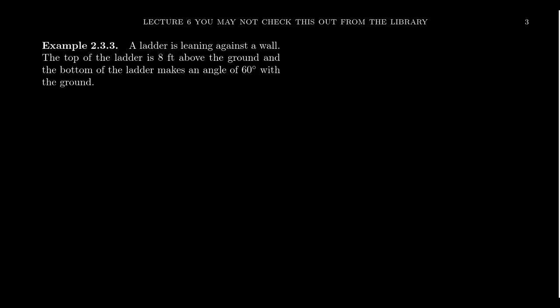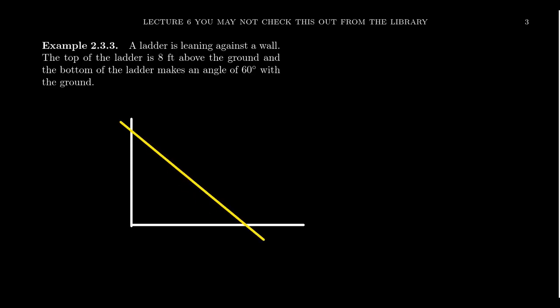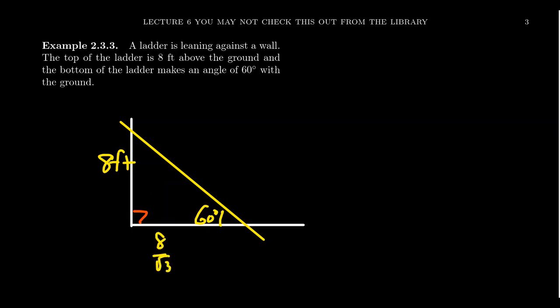As another example, consider a ladder leaning against a wall — a classic trigonometry problem. Assuming the wall is perpendicular to the ground, the ladder forms a right triangle. Suppose the top of the ladder is 8 feet above the ground and the angle the bottom of the ladder makes with the ground is 60 degrees. This makes a 30-60-90 triangle. Since 8 feet is opposite the 60-degree angle, we divide by the square root of 3 to get the short side: 8/√3 ≈ 4.6188 feet. So the ladder is about 4.6 feet away from the wall.